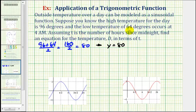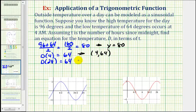Next, since a low temperature of 64 degrees occurs at 4 AM and T is the number of hours after midnight, we know that D of 4 must equal 64, which means our function would contain the point (4, 64). But also since a day is 24 hours, we know the period of our function would be 24, so if we add 24 to 4, D of 28 would also equal 64. So our function would also contain the point (28, 64).